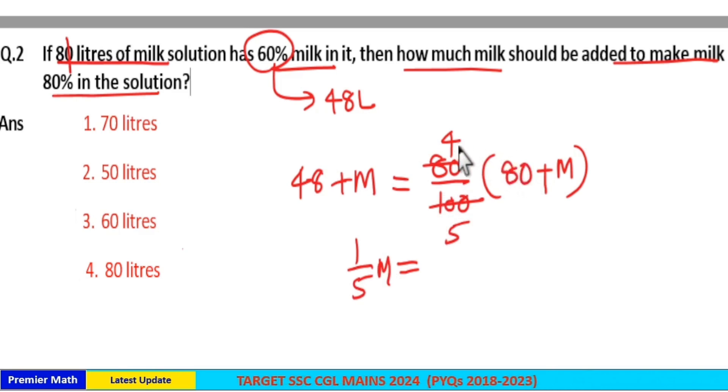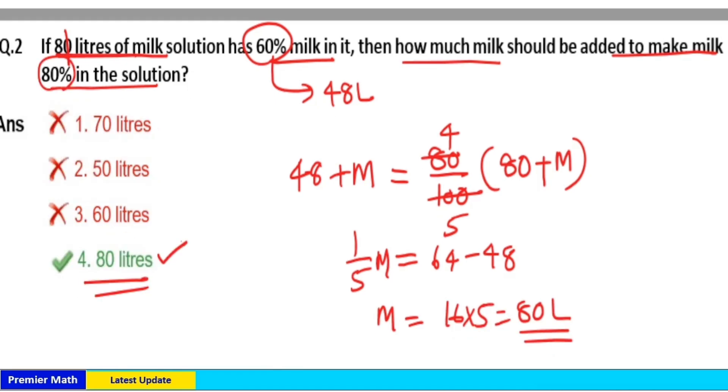16 into 4 is 64. 64 minus 48 is equal to 16. So amount of milk added is equal to 16 into 5, which is 80. Option 4 is your answer.